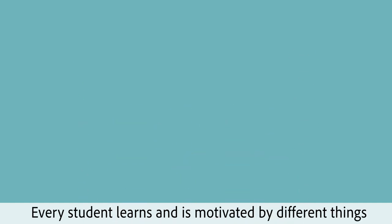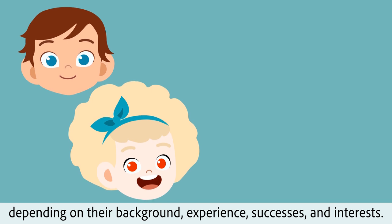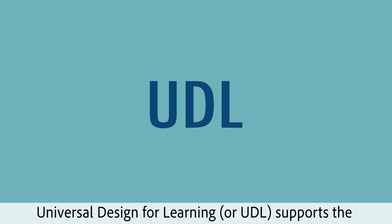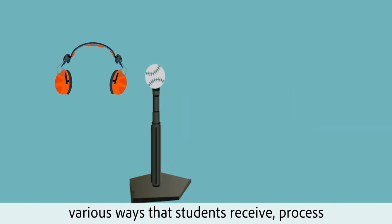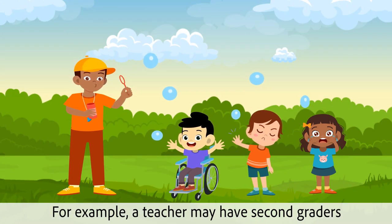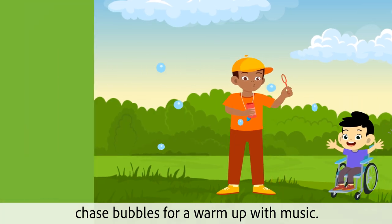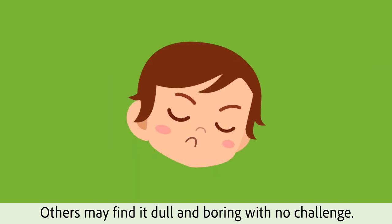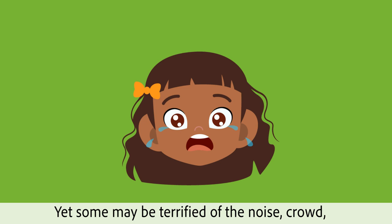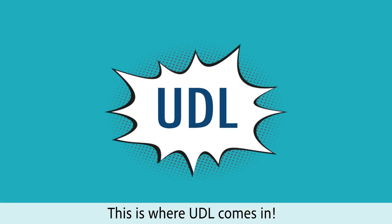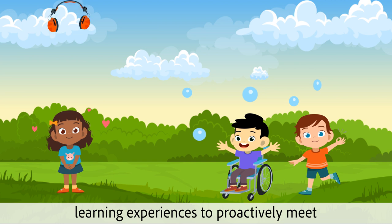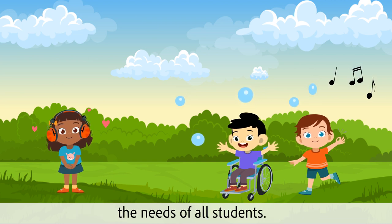Every student learns and is motivated by different things, depending on their background, experience, successes and interests. Universal Design for Learning, or UDL, supports the various ways that students receive, process and express information. For example, a teacher may have second graders chase bubbles for a warm-up with music. Some students may find this challenging and fun. Others may find it dull and boring with no challenge. Yet some may be terrified of the noise, crowd and running into people. This is where UDL comes in. Universal Design for Learning directs the creation of learning experiences to proactively meet the needs of all students.